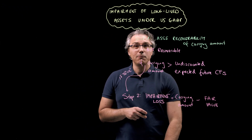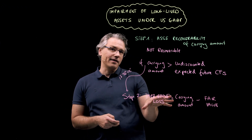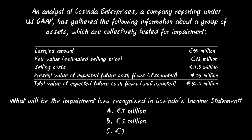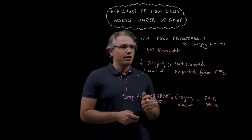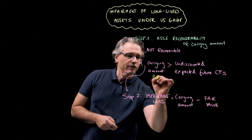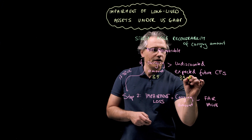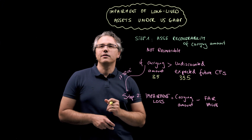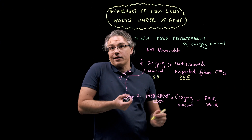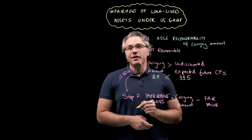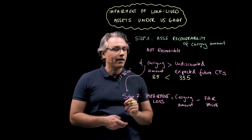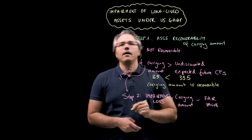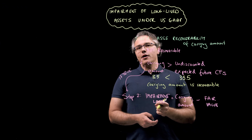Let's check whether we should be concerning ourselves with step two given the data in the scenario. We are told that the asset's carrying amount is 35 million and that the total undiscounted value of expected future cash flows is 35.5 million. So, 35 million for carrying amount and 35.5 million for the sum of undiscounted expected future cash flows. Obviously, 35 million is lower than 35.5 million, implying that under US GAAP, the asset's carrying amount is considered recoverable, and there is no impairment loss to record.